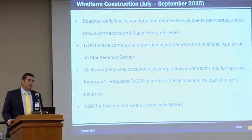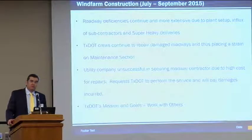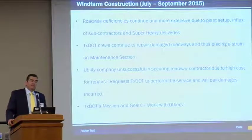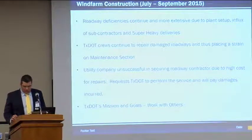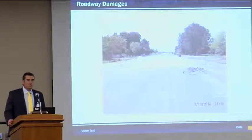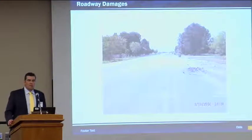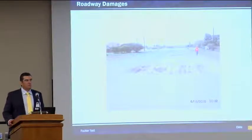From July through September, that's where it got hot and heavy, where the damages were more extensive. The subcontractors came in with an influx of super heavies and delivery trucks. TxDOT crews had to blitz the area and pull resources from various maintenance sections just to keep that road passable — long hours, 12-hour days, 14-hour days. The utility company was unsuccessful in securing a roadway contractor due to the high cost for repairs. It was very shocking to them how much it costs to repair roadways. So they opted to let TxDOT continue to do a good job, as they said, and indicated they would pay for the damages.